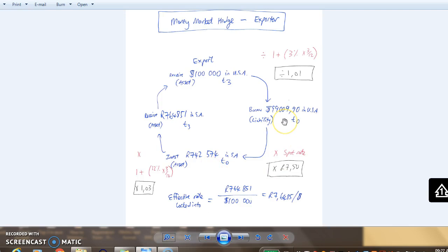Now this liability in the US is not exposed to fluctuations in the exchange rate, and we've got an asset in South Africa that will earn interest at 12% for three months. At the end of the three month period we will have this asset grown to R764,000.